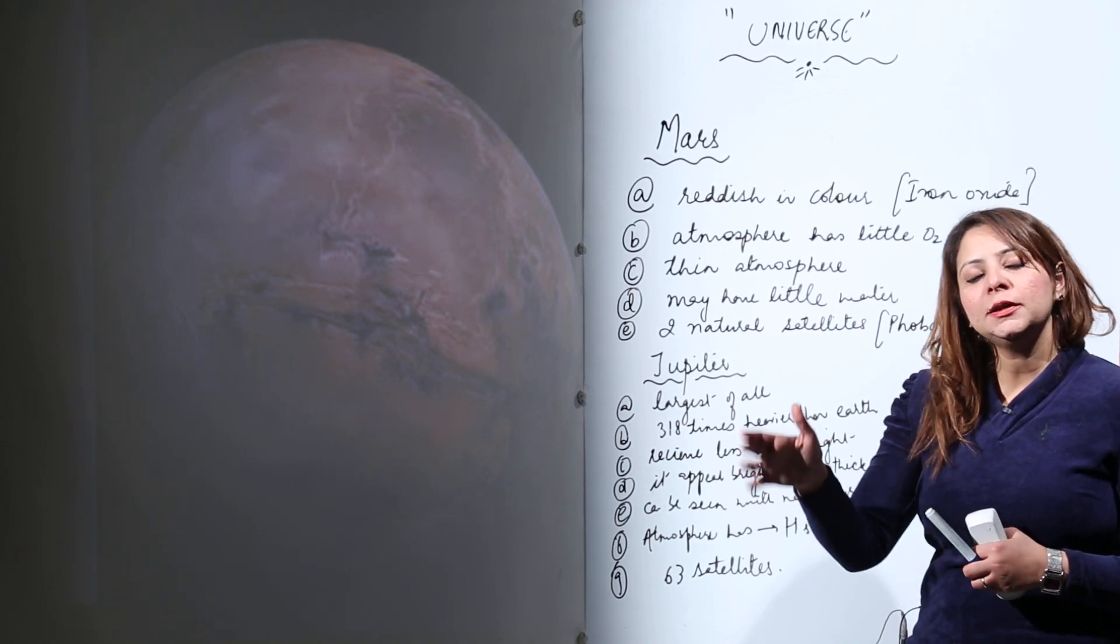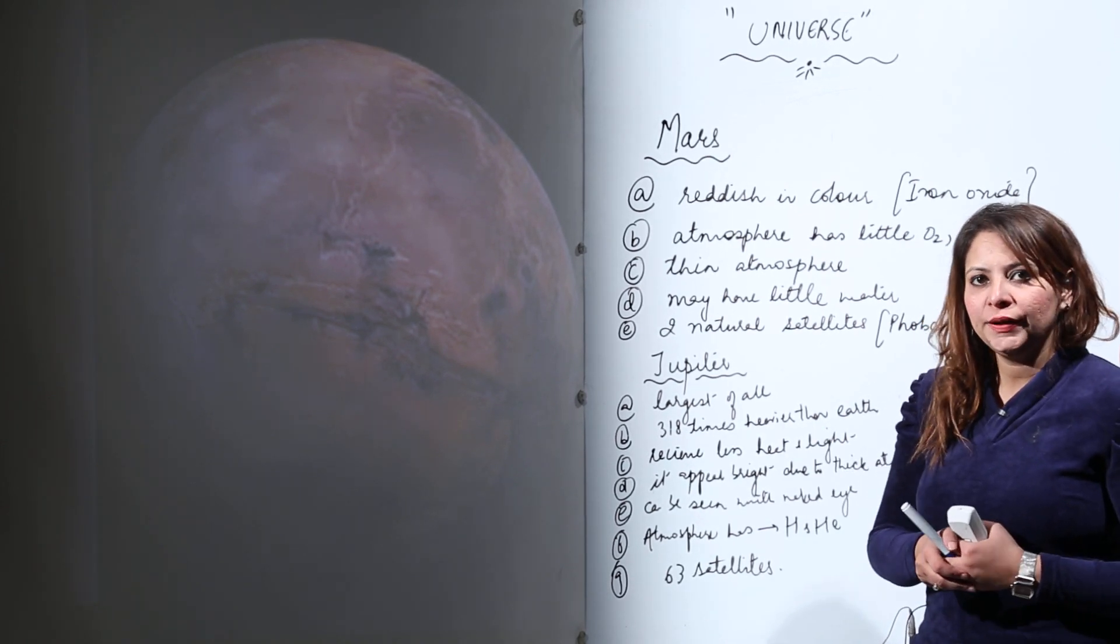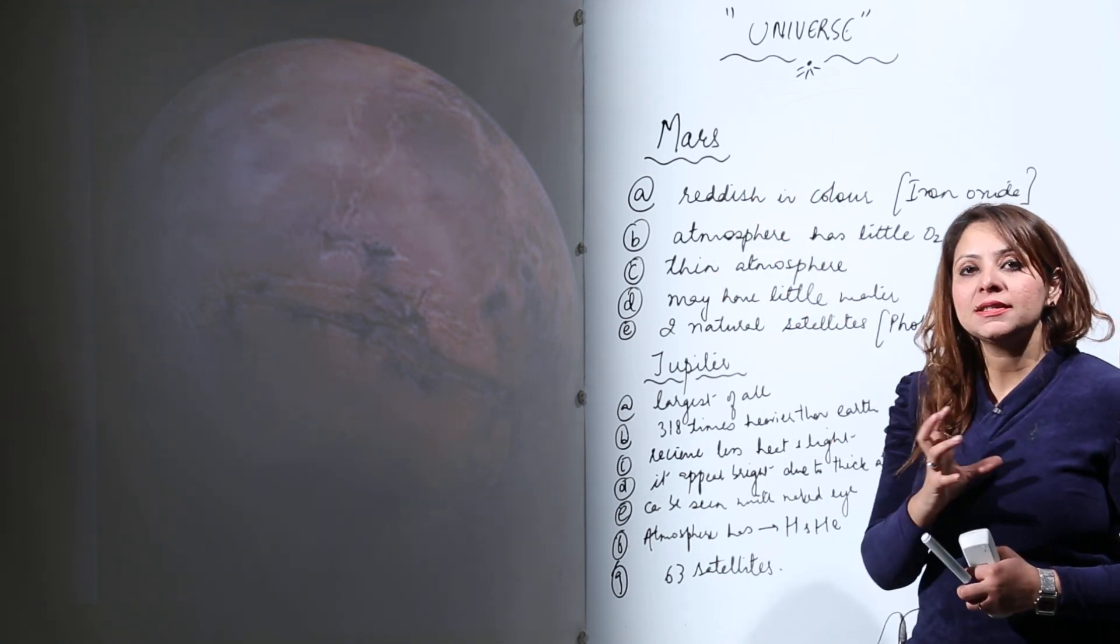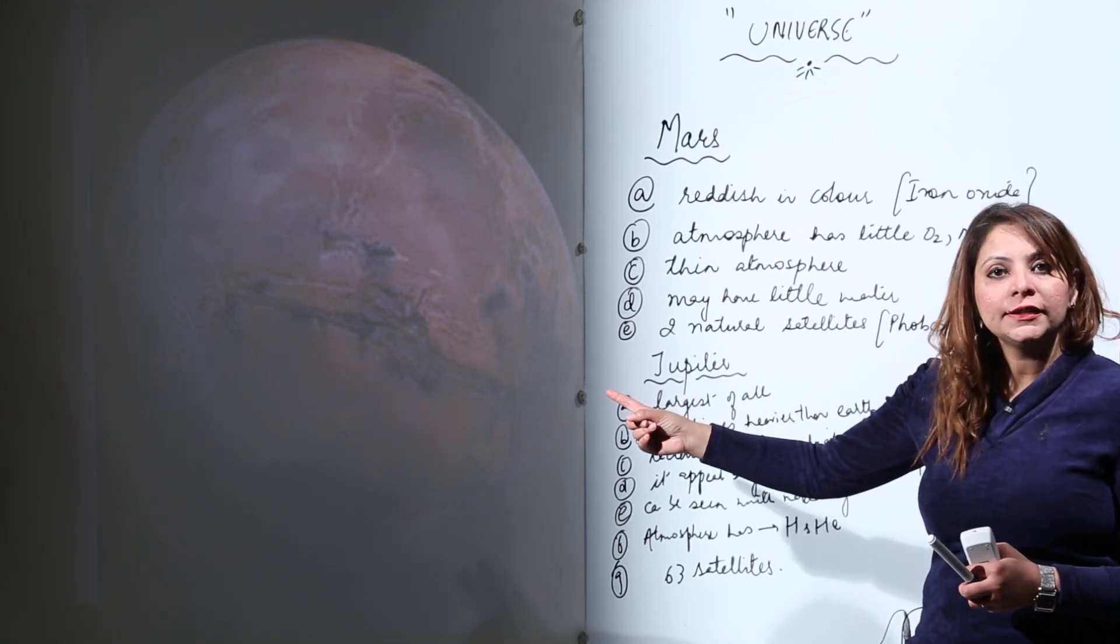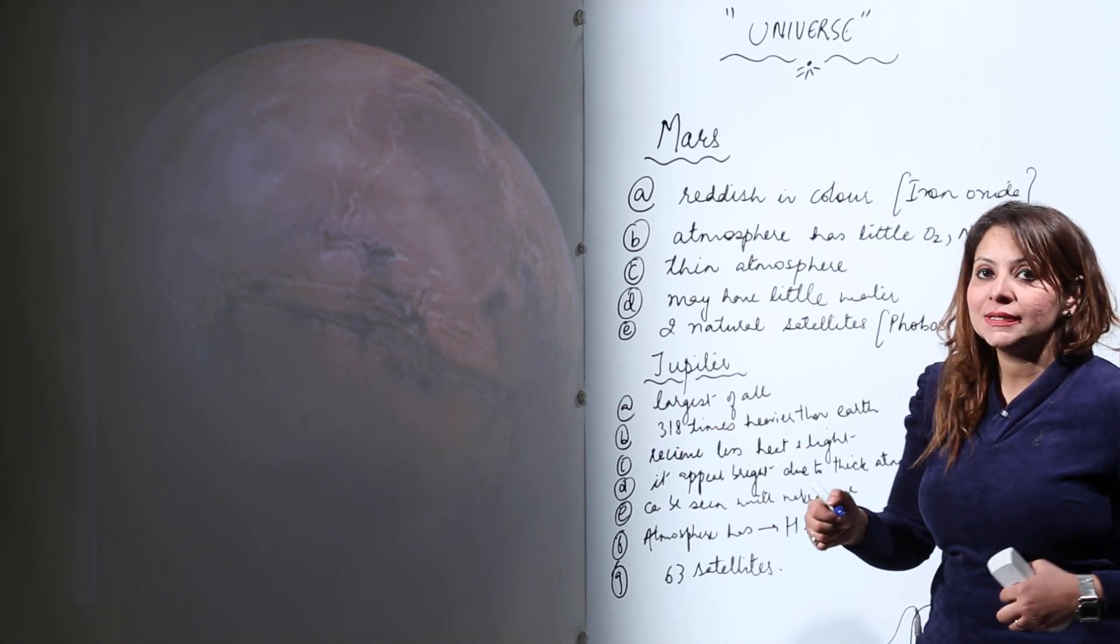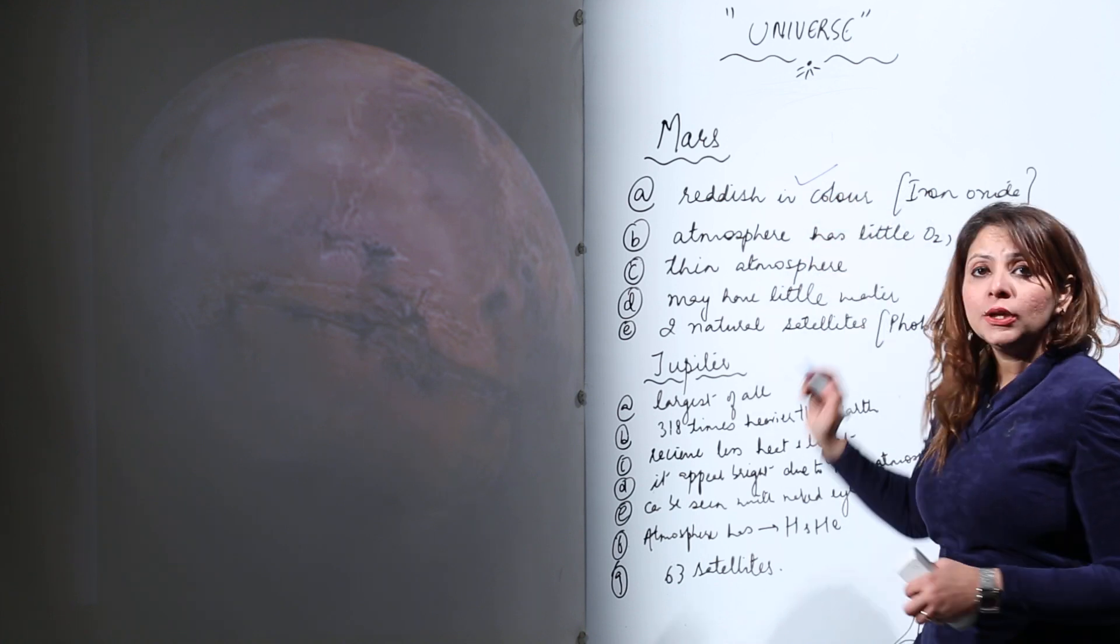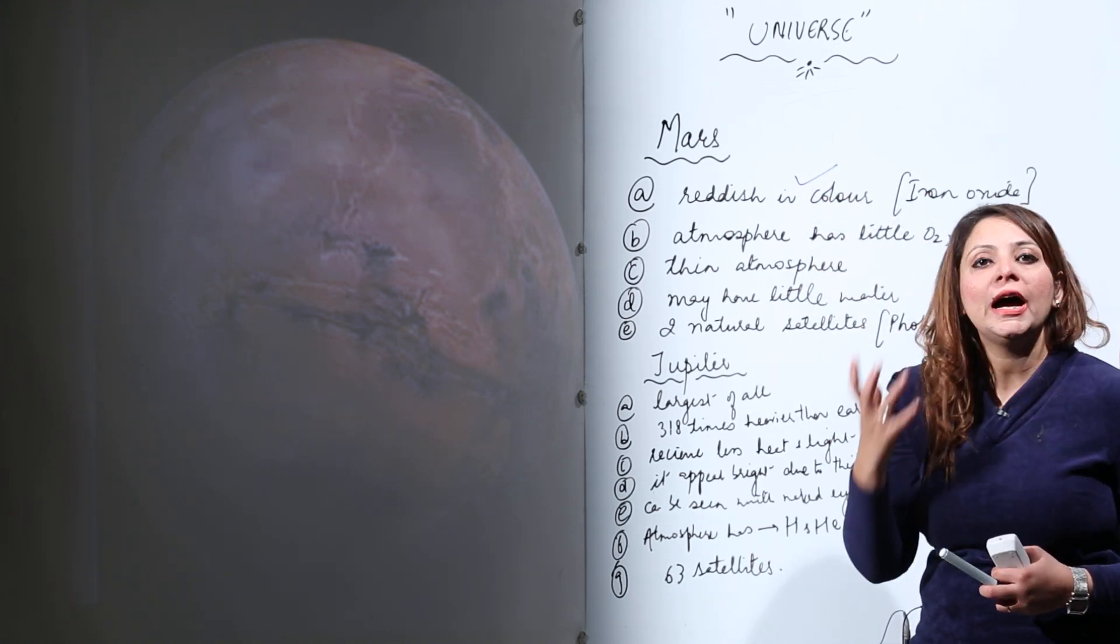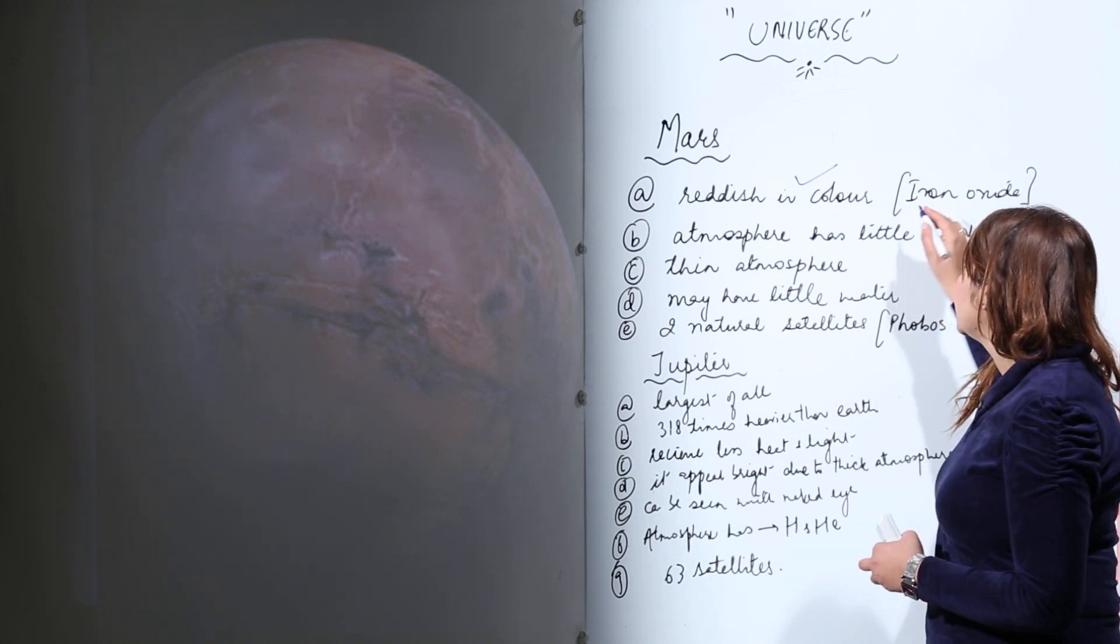Now we are going to start with another planet in sequence after Prithvi, that is the Earth, which is Mars. Mars has a characteristic feature - as you can see in the figure, it appears to be red and so it is called the red planet. The reason it is red in color is because it has a lot of iron oxide on its surface.